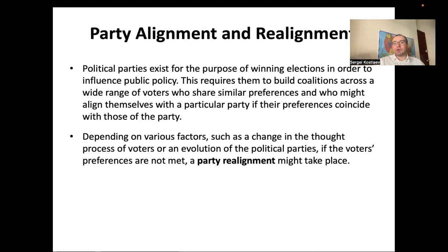Sometimes, when ideologies shift, realignment happens in the party system. In the 19th century, the Republican Party was more progressive and the Democratic Party more conservative — it was the Republican Party that abolished slavery. But today the Democratic Party is mostly liberal and the Republican Party mostly conservative. This realignment began in the 1960s, when conservative Democrats in southern states one by one switched to become Republicans.